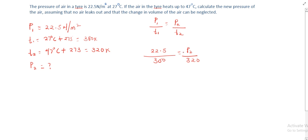Then we will cross multiply. 300 multiplied by P2 equals 320 multiplied by 22.5. So 300 P2 equals 320 multiplied by 22.5, which equals 7200.